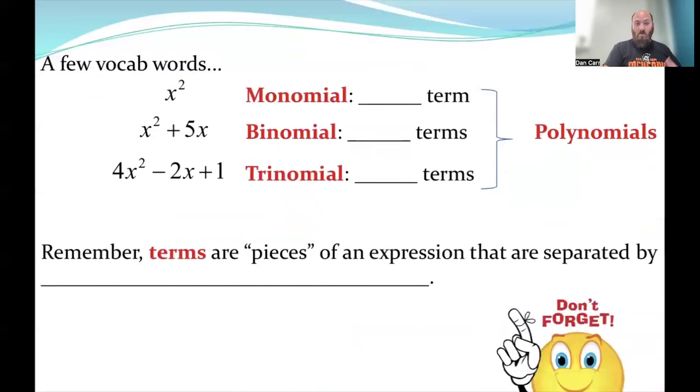Now a couple of vocab terms to talk about real quick. If we talk about a monomial, that is describing something that looks like this, made up of one term. Then we have a binomial, so the bi means two because we have two terms. And finally, the trinomial has one, two, three, that gives us three terms. These all fall under the same blanket term, which is polynomials, and that just means many terms.